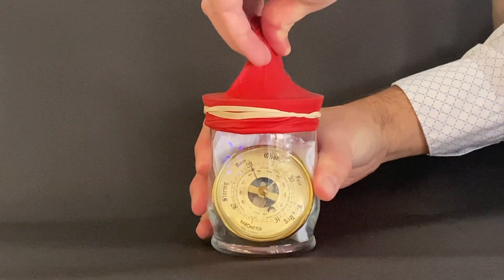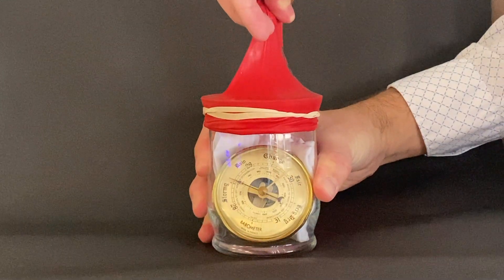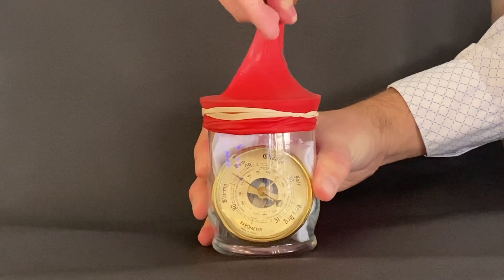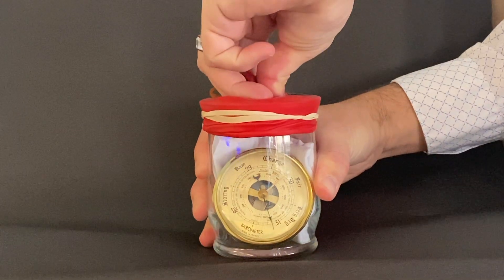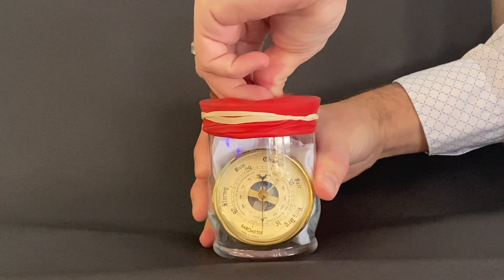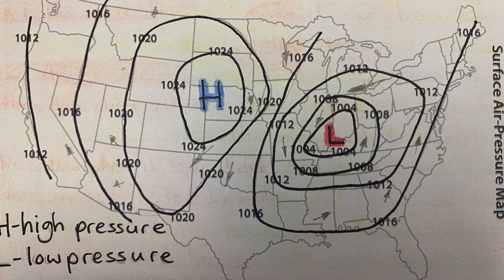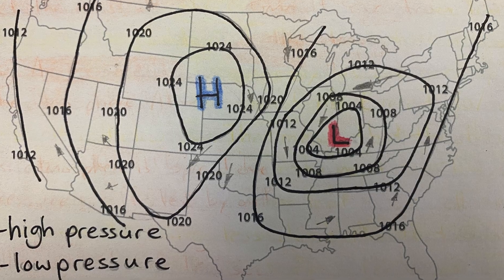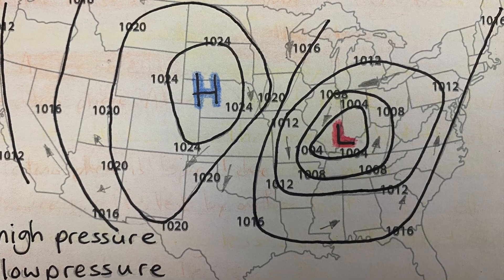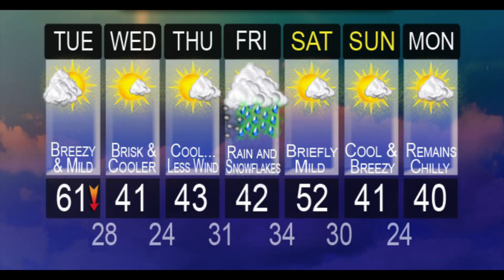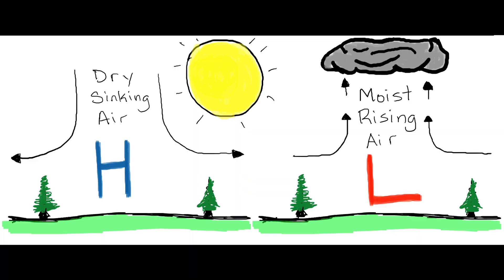Air pressure data are of the greatest importance to meteorologists. Based on the magnitude of pressure differences and the movement of high-pressure and low-pressure air masses across the land, meteorologists can forecast future weather events. Differences in air pressure contribute to wind.